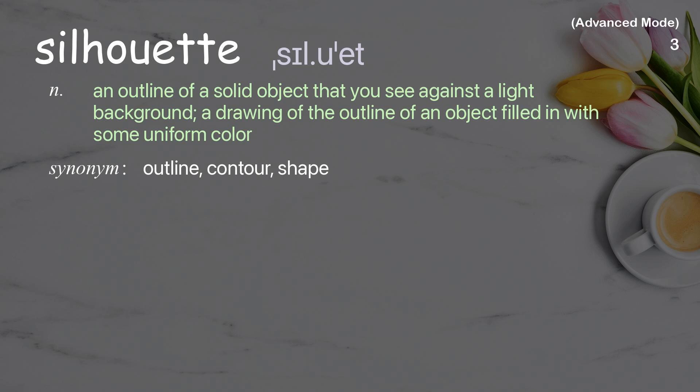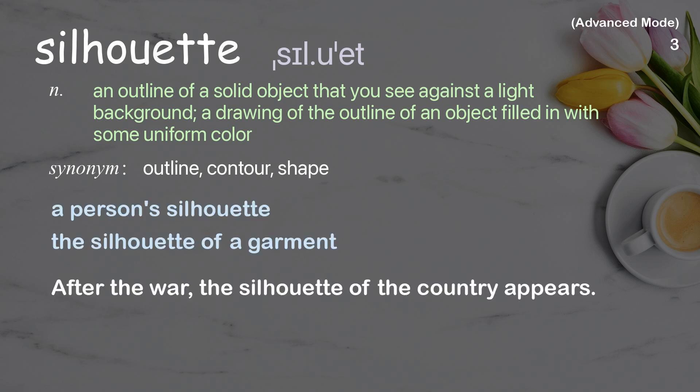Silhouette: an outline of a solid object that you see against a light background; a drawing of the outline of an object filled in with a uniform color. Examples: a person's silhouette, the silhouette of a garment. After the war, the silhouette of the country appears.